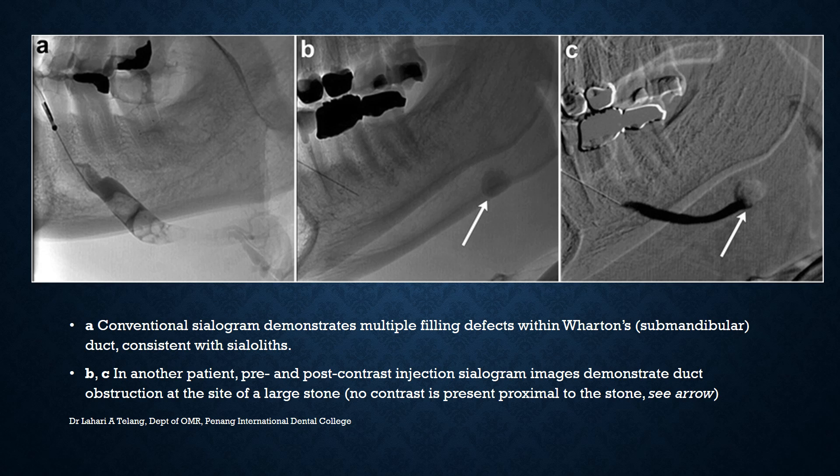A conventional sialogram demonstrates multiple filling defects within Wharton's duct in this image, consistent with the presence of sialoliths, as the stones obstruct the duct and prevent the dye from flowing smoothly into the gland. In another patient, comparing pre- and post-contrast injection sialogram images easily demonstrates where the obstruction is occurring, caused by a large sialolith.